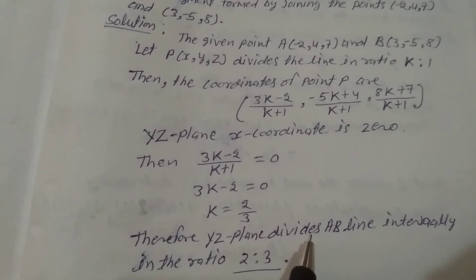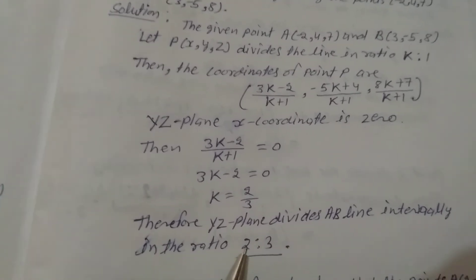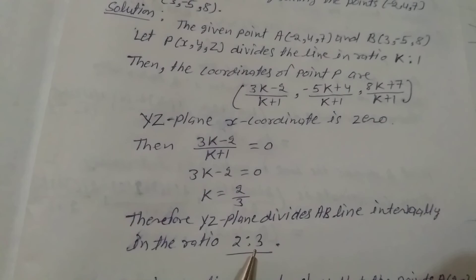the YZ plane divides line AB internally in the ratio 2:3. That is the answer.